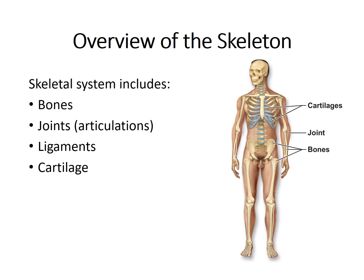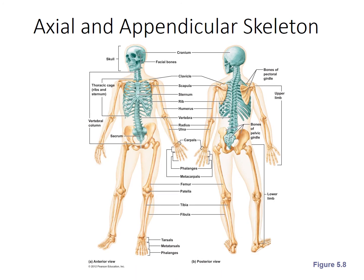And lastly, cartilage is also a part of the skeletal system. Cartilage is often associated with joints, such as the joints between the ribs and the sternum. The skeletal system is divided into two divisions: the axial and the appendicular. The axial skeleton includes the bones of the long axis, shown in this figure from your book in green. They include the bones of the skull, the vertebral column, and the bony thorax.